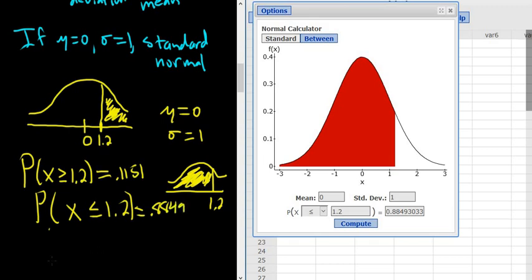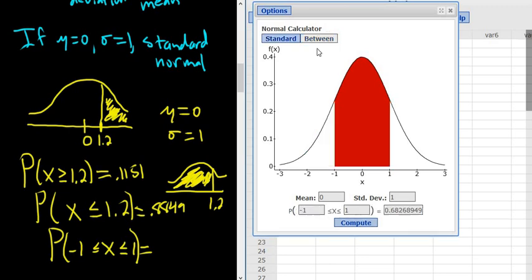Sometimes you want the probability that a number is between two numbers. So x is between say 1 and negative 1. This is called the between probability. In this case you just click the between button and then you enter the numbers which coincidentally they are already there. How nice. This is 0.6826. And this actually shows you what the picture looks like. This area between negative 1 and 1 is the probability that a number is chosen at random between negative 1 and 1.